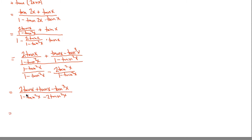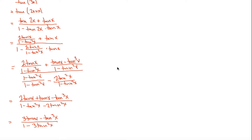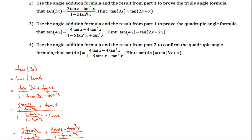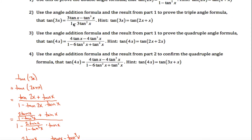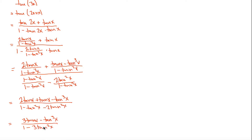This simplifies nicely: you have 2 tangent of x plus 1 more, so 3 tangent of x in the numerator. Down in the denominator, you have negative 1 tangent squared x and you're taking away 2 more, giving 1 minus 3 tangent squared x. So we get 3 tangent of x minus tangent cubed x over 1 minus 3 tangent squared x — the triple angle formula.